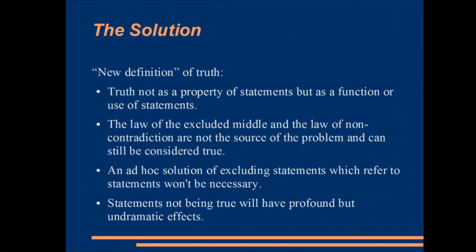The solution involves formulating a new definition of truth, but the difference will be very subtle — more of a clarification than an overhaul of what truth is. The difference from the traditional view is that truth, in my view, is not a property of statements, but rather a function or use of statements. What this means is that statements cannot be true, which we will soon see has some interesting effects. If this works, then the laws of logic can most likely be said to not be the cause of the paradox, and an ad hoc solution of excluding some statements won't be necessary.